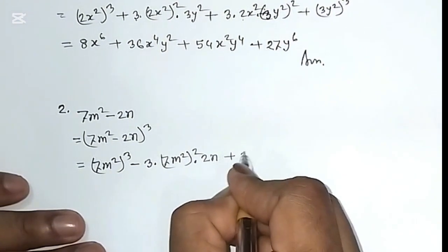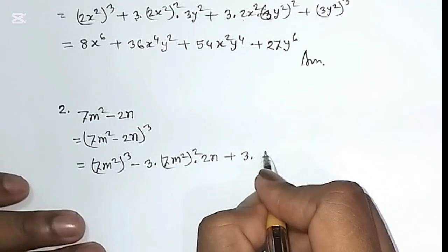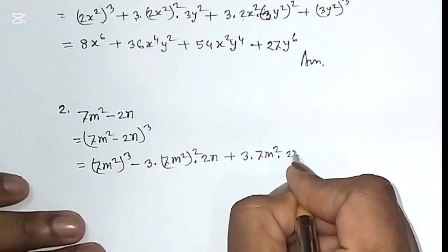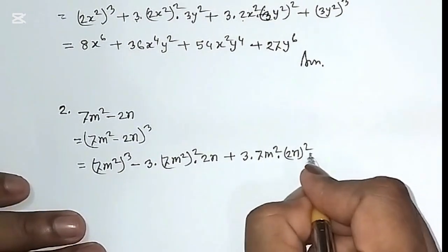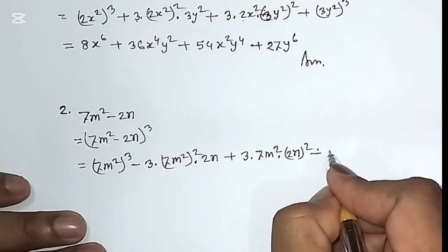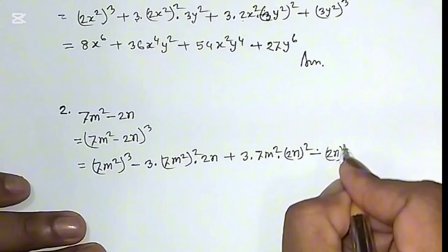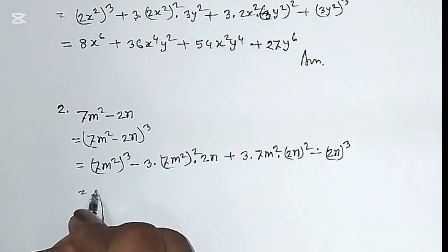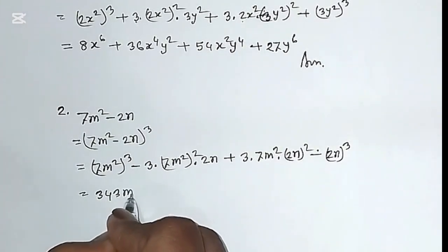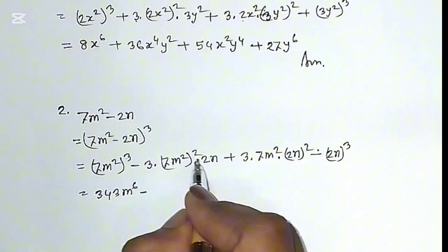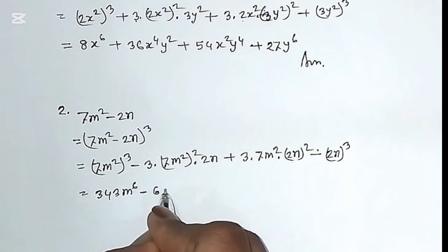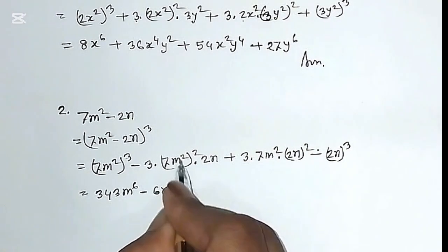...plus 3 into a, which is 7m², into b squared, which is (2n)², minus b cube, which is (2n)³. The cubic value of 7 is 343, m to the power 6, minus 3 times 49, m to the power 4...